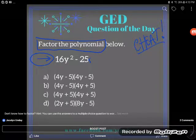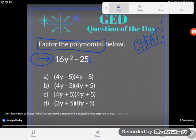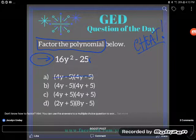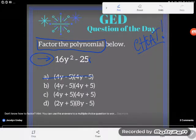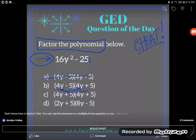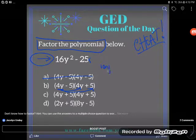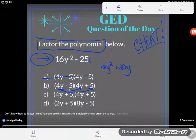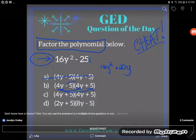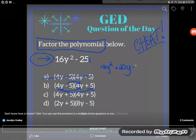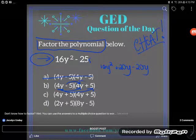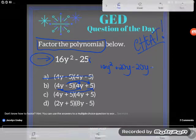A's ruled out. Let's try B. Again, I'll start with my first term and multiply it by every term in the second parentheses. So 4y times 4y is 16y squared. And 4y times positive 5 is positive 20y. Now I'll multiply out the next one. The next term in my parentheses is negative 5. So negative 5 times 4y would be negative 20y. And negative 5 times positive 5 would give me negative 25.